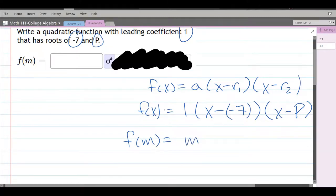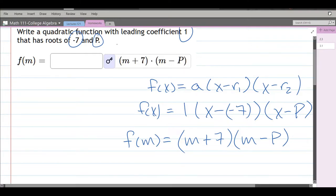Minus negative 7 is plus 7. You could leave it as minus negative 7. That's fine. And x appears a second time, so you're going to replace that with m. Now, the 1, I left the 1 out because times 1 does nothing. And there we go. m plus 7 times m minus p.